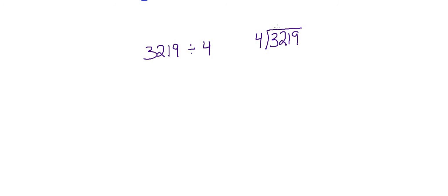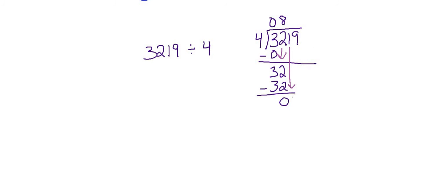How many times can four go into three? It can't, so we could put an X or a zero there. Zero times four is zero; three minus zero is three. Then we bring down our next number. How many times can four go into 32? If you know your math facts, that's an easy one — eight. Eight times four is 32. Now we have a zero here, but we're still going to carry down the next number, which is one.